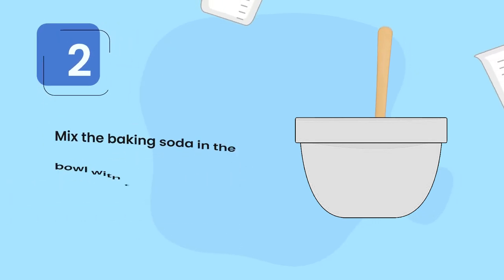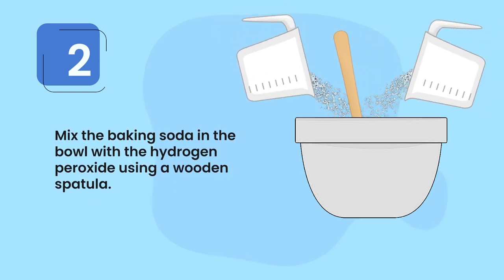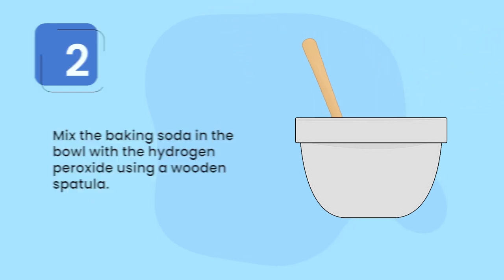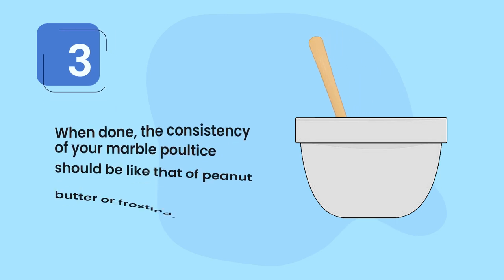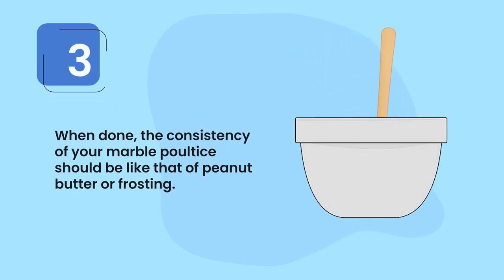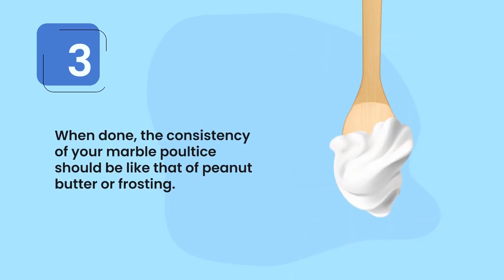Step two: mix the baking soda in the bowl with the hydrogen peroxide using a wooden spatula. Step three: when done, the consistency of your marble poultice should be like that of peanut butter or frosting.